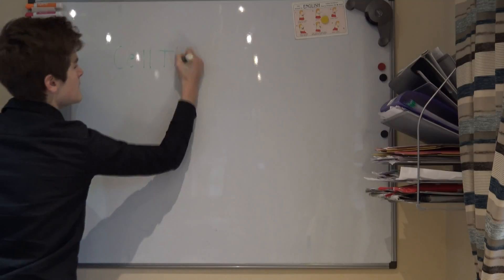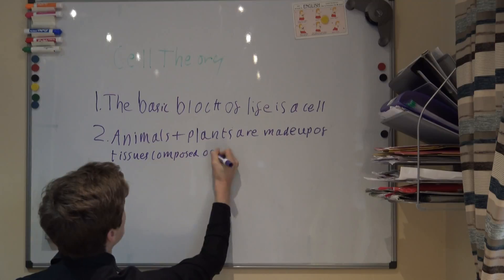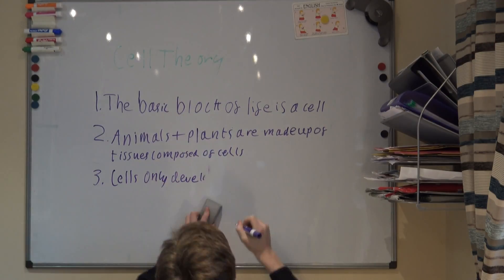This led to cell theory being developed, which states that both plants and animal tissue are composed of cells, which are the basic units of life, and also that the cells only develop from existing cells.